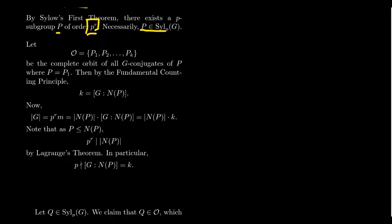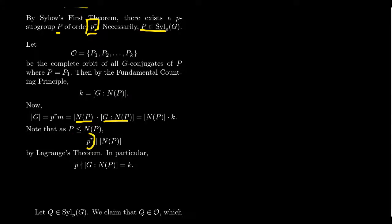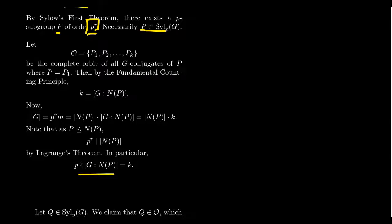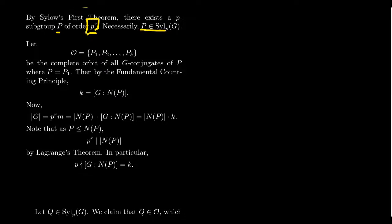By Lagrange's theorem, the order of G — which is P to the R times M — factors as the order of the normalizer of P times the index of the normalizer of P. By the fundamental counting principle, this index equals K. And because P is a subgroup of its normalizer, the order of P, which is P to the R, must divide the order of the normalizer. Since P to the R already divides in there, no factors of P remain to divide K. So P does not divide K.